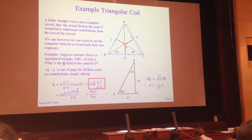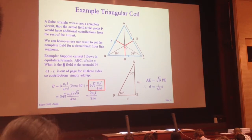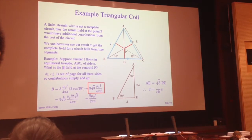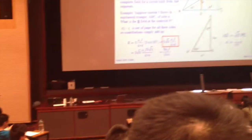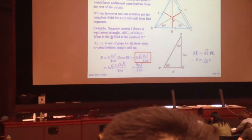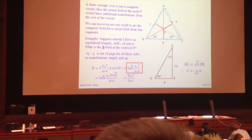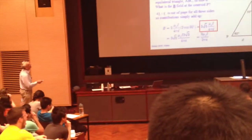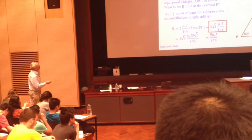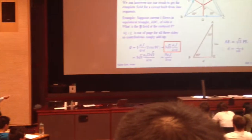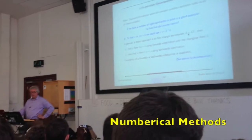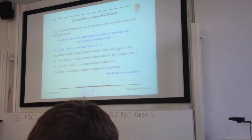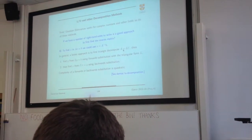The single finite wire wasn't, of course, a realistic circuit. Just write it in terms of the angles that are subtended to each of the wires from that observation point — decomposed into two matrices which were multiplied together.